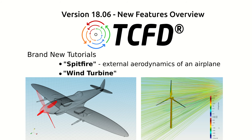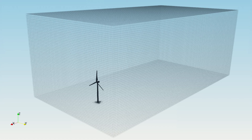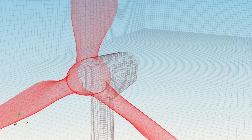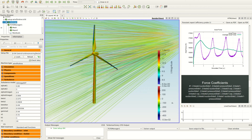The second one is the wind turbine, which shows the simulation setup of a wind turbine including an automatic evaluation of its efficiency, torque, and power generated by the wind, as well as the aerodynamic forces acting on its blades.